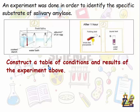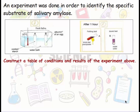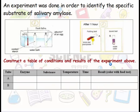The question is construct the table of conditions and results of the experiment above. So to construct the table, first of all, we have to draw it and divide it. We have here two tubes, so we put two rows for the tubes.